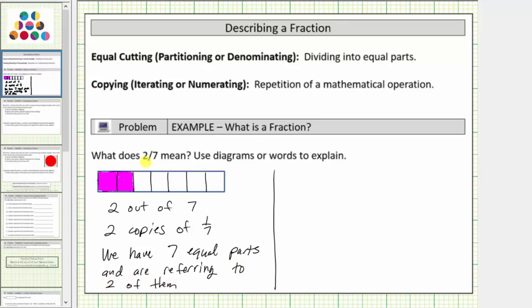A fraction bar means division, so two-sevenths also means two divided by seven. We can also express ratios in fraction form, which means two-sevenths can mean the ratio of two to seven.